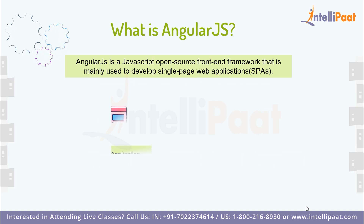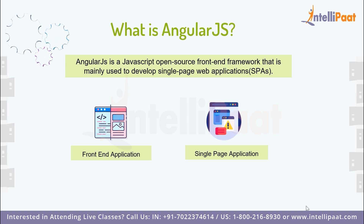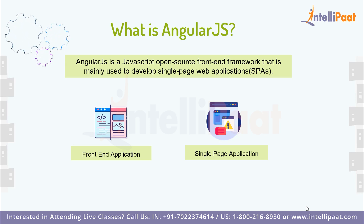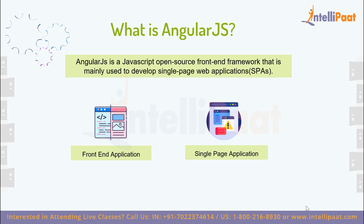Now, what is AngularJS? AngularJS is a JavaScript open source front-end framework mainly used to develop single page web applications. It is a continuously growing and expanding framework which provides better ways for developing web applications. It changes static HTML to dynamic HTML pages. Its features like dynamic binding and dependency injection eliminate the need for code that would otherwise have to be written manually. The latest stable version of AngularJS is 1.7.7.